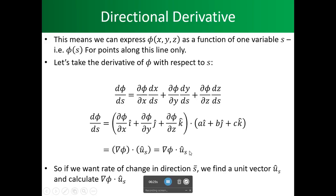So if we want the rate of change in the direction of s, we find a unit vector u_s and calculate the gradient of phi dotted with the unit vector s.